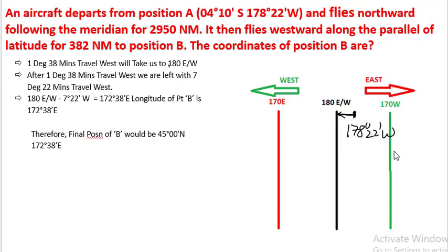How much is this? This is 180 minus 178 degrees 22 minutes, which equals 1 degree 38 minutes. So first the aircraft is travelling 1 degree 38 minutes to the west and then it reaches the 180 degrees east-west meridian.